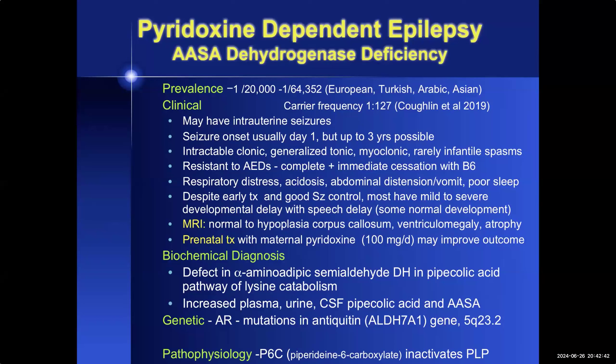In classic severe cases, the infants are resistant to all standard anti-epileptic drugs and have complete and immediate cessation of seizures with intravenous pyridoxine. Additional features may include respiratory distress, acidosis, abdominal distension with vomiting, and forced sleep. Despite early therapy and good seizure control, most children will have mild to severe developmental delay and speech delay. MRI may be normal or show hypoplasia of the corpus callosum, ventriculomegaly, and atrophy. The defective enzyme is alpha-aminoadipic semialdehyde dehydrogenase in the pipecolic acid pathway of lysine catabolism; biomarkers are elevated plasma, urine, and CSF pipecolic acid and AASA.